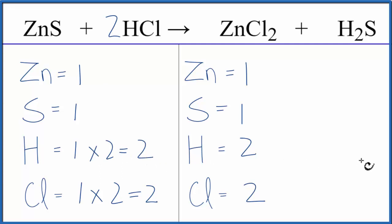And we're done. This equation is balanced. This is Dr. B with the balanced equation for ZnS plus HCl yield ZnCl2 plus H2S. Thanks for watching.